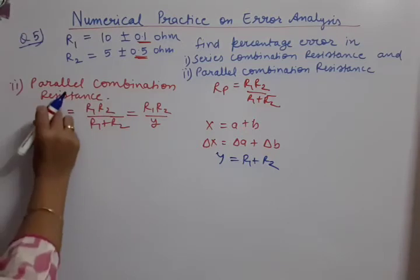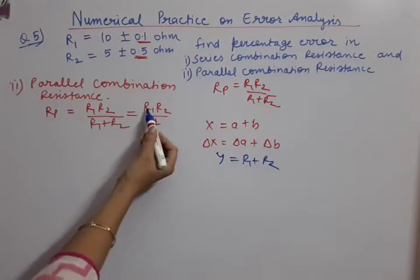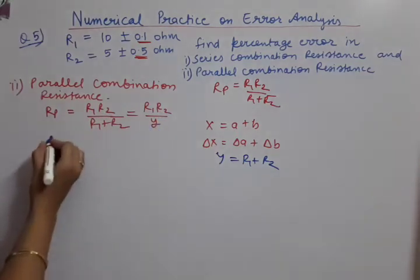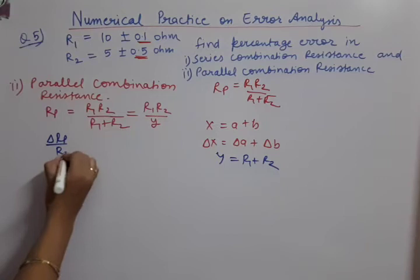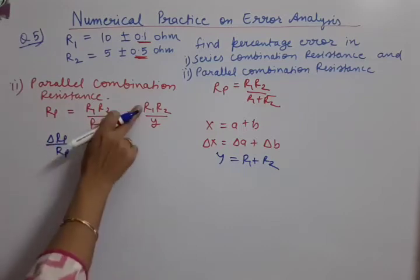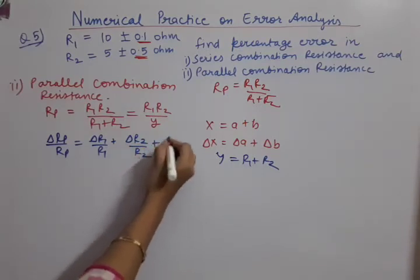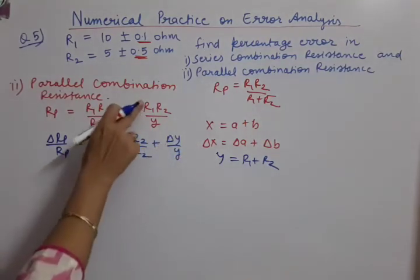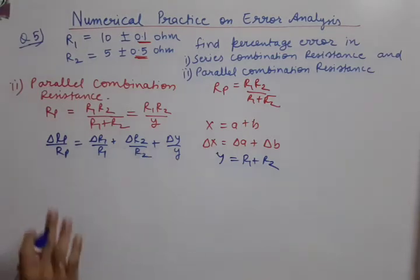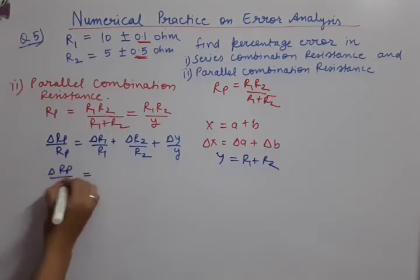Now what to do? Next, Rp we have written. We have made a new formula R1 R2 upon Y. Now there is multiplication and division. When there is multiplication and division, then what kind of errors are added? That is, relative error. So how I will write the error expression? Delta Rp by Rp equal to Delta R1 by R1 plus Delta R2 by R2 plus Delta Y by Y. Because 1, 2, 3 things are coming. All the 3 things will be added. Errors are added. Errors are always added. Now let us put all the values whichever we have.